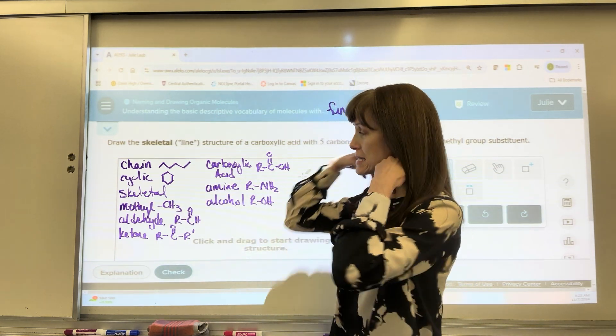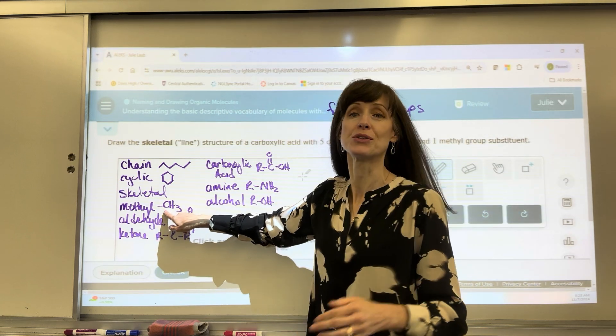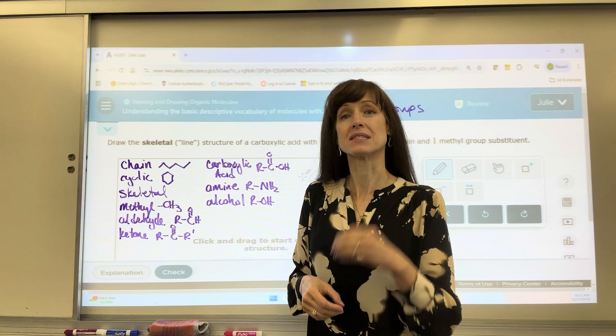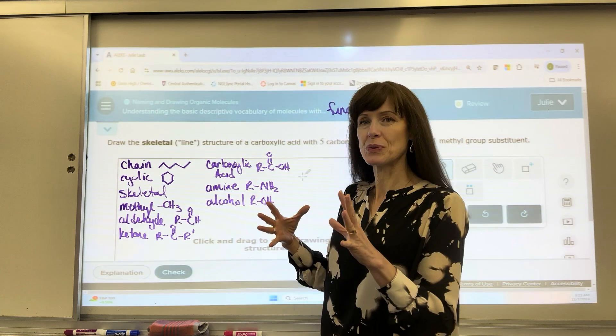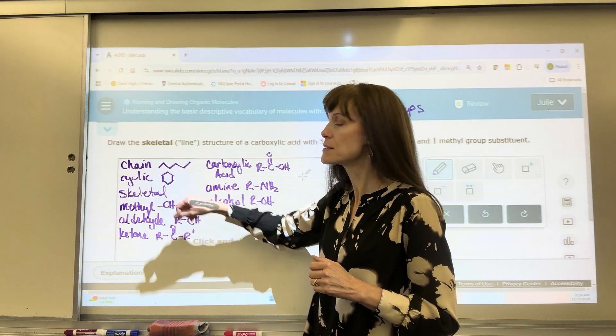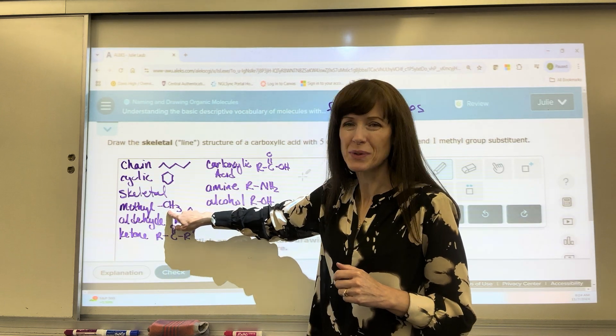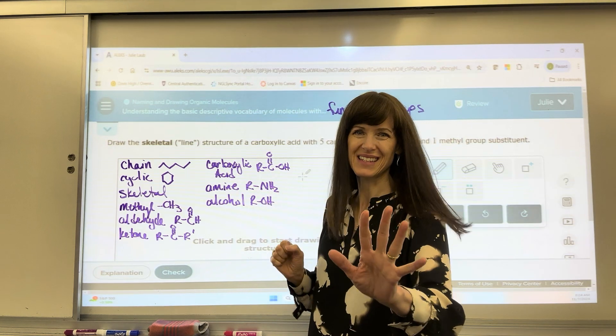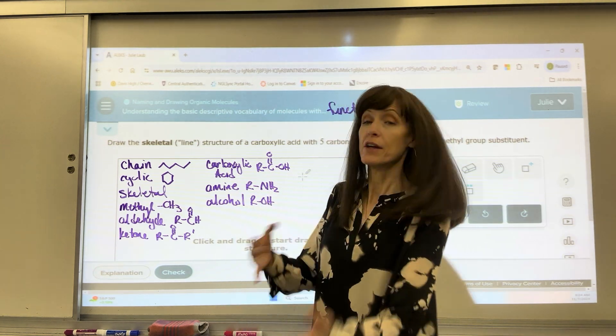Now the functional groups that we're going to see, you'll be asked to write down methyl groups. That's just a CH3. That's a substituent. Substituent is what's going to be attached to your chain of carbons. So a methyl substituent, that would be a CH3, and I'll show you this, attached to it.